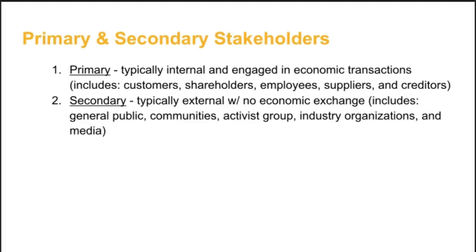We can organize stakeholders into three groups: Primary, Secondary, and Excluded. Primary are often those internal stakeholders engaged in economic transactions, so this may include stockholders, customers, suppliers, creditors, and employees. Secondary stakeholders are usually external with no economic exchange, but they are affected by the actions of the business. This might include the general public, communities, activist groups, industry organizations, and the media.